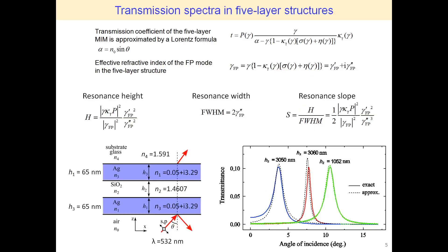We performed analysis of the field in MIM structures based on rigorous electromagnetic theory and obtained analytical expressions for estimation of the characteristics of resonance line shapes and spectra. In the case of close to normal incidence, the dependence of transmission coefficient t on the incidence angle for the MIM structure can be approximated by a Lorentz formula as follows.